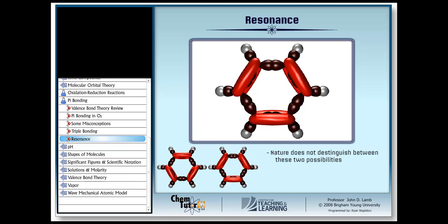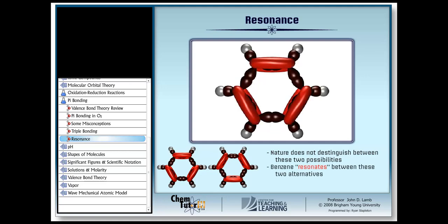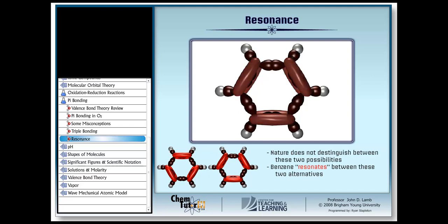You might think of the double bond as swapping back and forth between these two structures. This phenomenon is called resonance, because we might envision the benzene molecule as resonating back and forth between these two alternatives. And indeed, the characteristics of bonding in molecules like benzene bear out the hypothesis that something like resonance is happening.